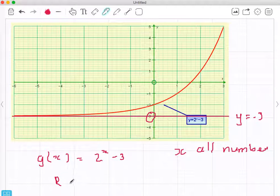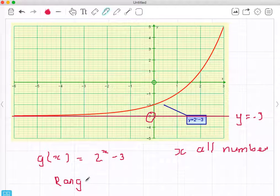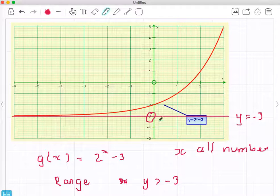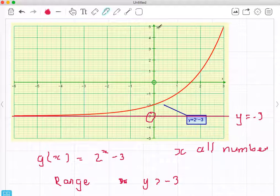So this line is actually y equals negative 3, but the graph never touches it. So the range of all the numbers greater than y—y is greater than negative 3 but it doesn't include it. So I can have all the numbers bigger than negative 3.